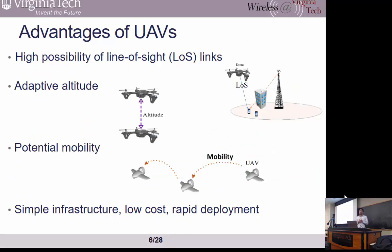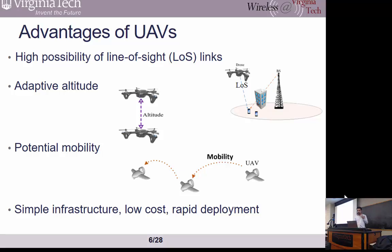The key advantages and features of UAVs that help us deploy them efficiently include: first, line-of-sight communication links — because they are at high altitude compared to terrestrial networks, they can easily establish line-of-sight communication to the ground. They have adaptive altitude, so by changing altitude we can reduce blockage and provide better communication. They have potential mobility, and by using just a few drones and taking advantage of mobility, we can provide service for a large geographical area. They also have simple infrastructure, enabling low-cost and rapid deployment.